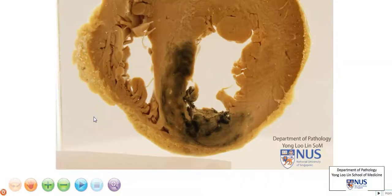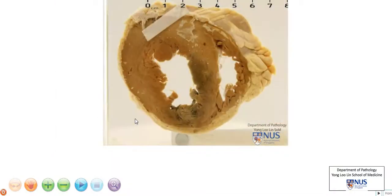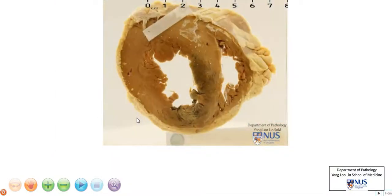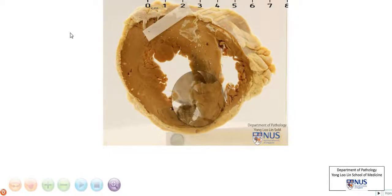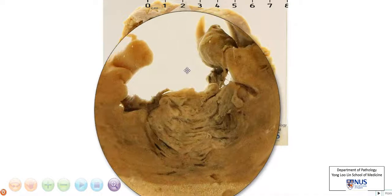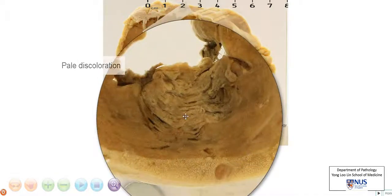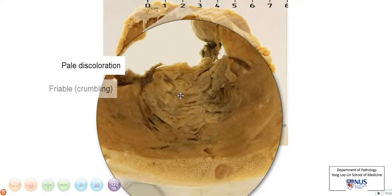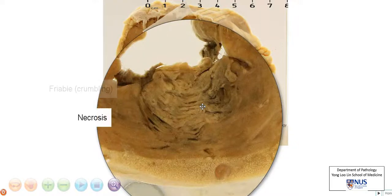So let's turn the specimen around and let's focus on this abnormal area. We can see that there is an area of pallor or pale discoloration. The tissue here grossly appears a little bit friable or crumbly, and this is the appearance of necrosis grossly.